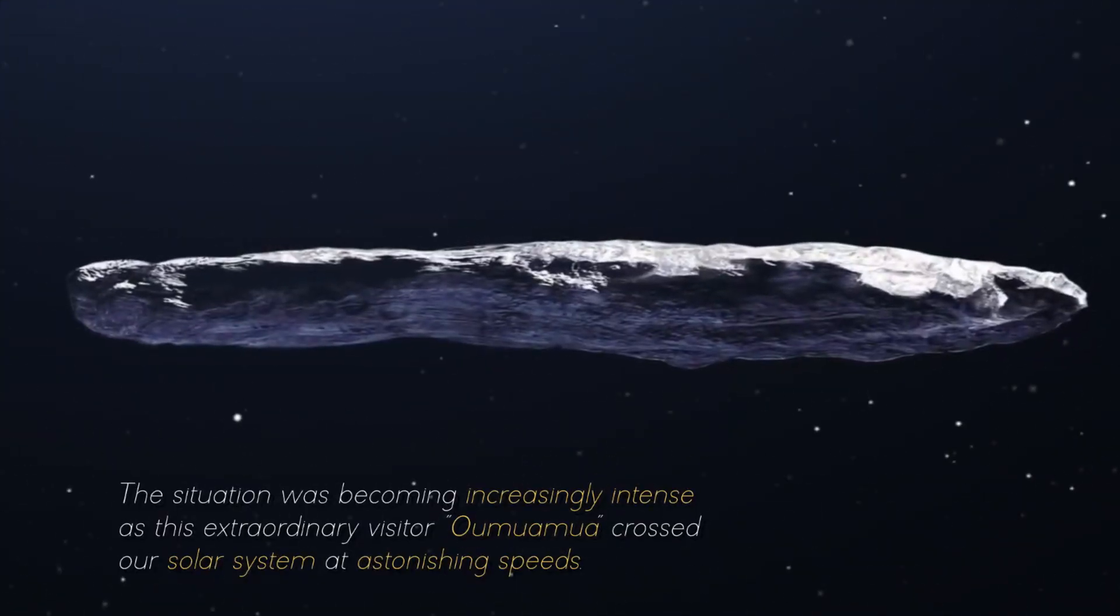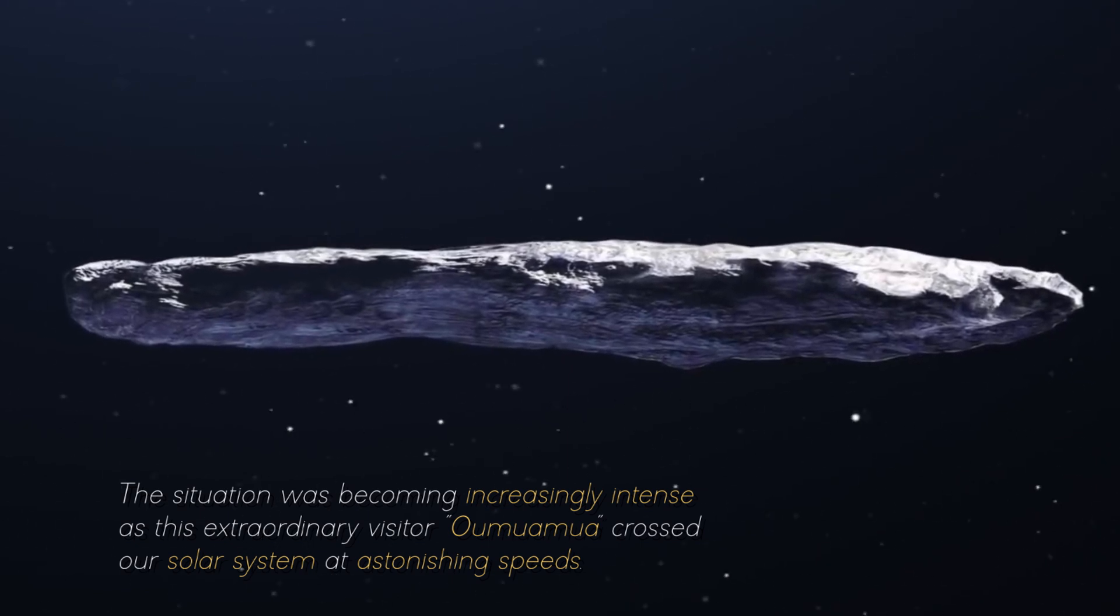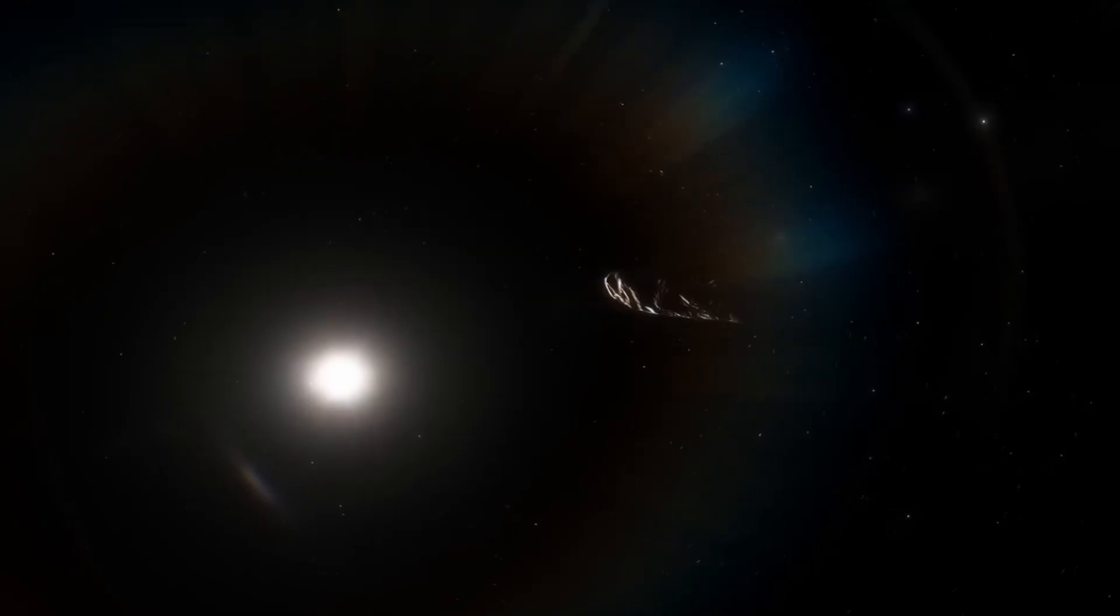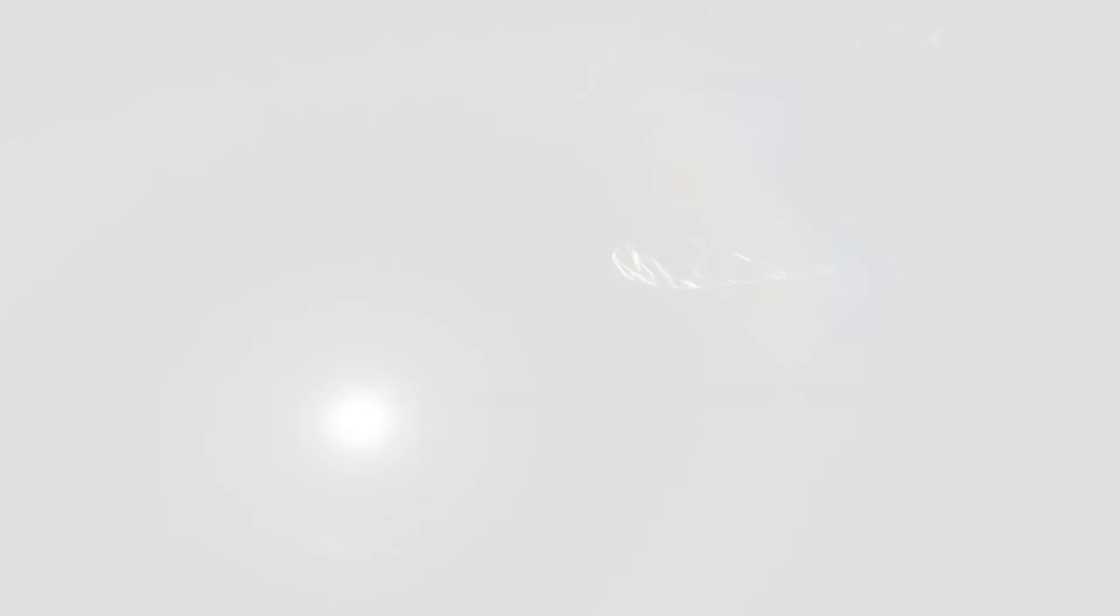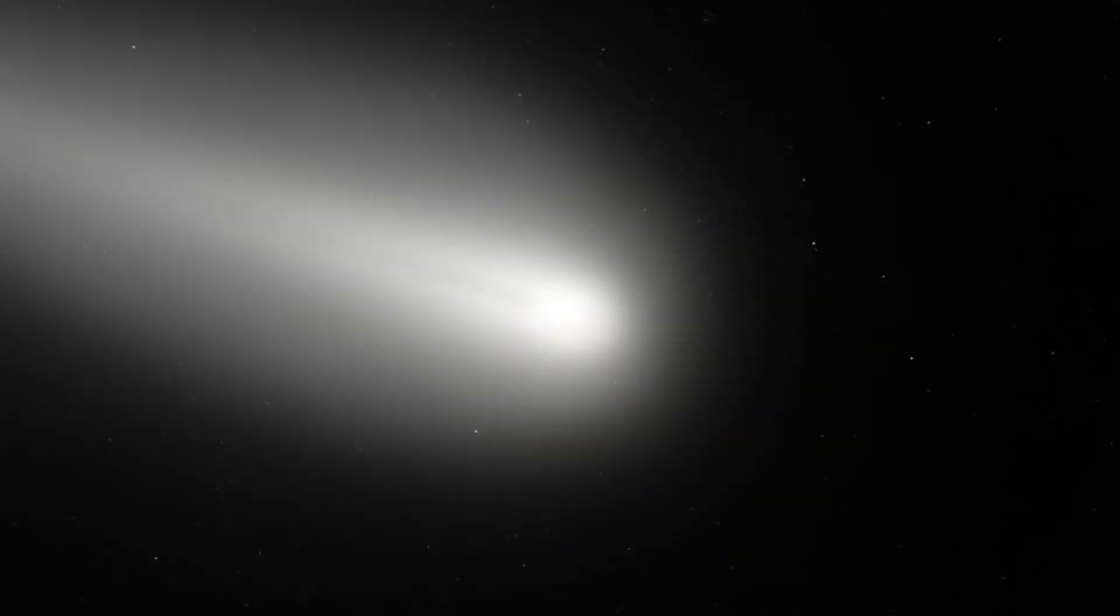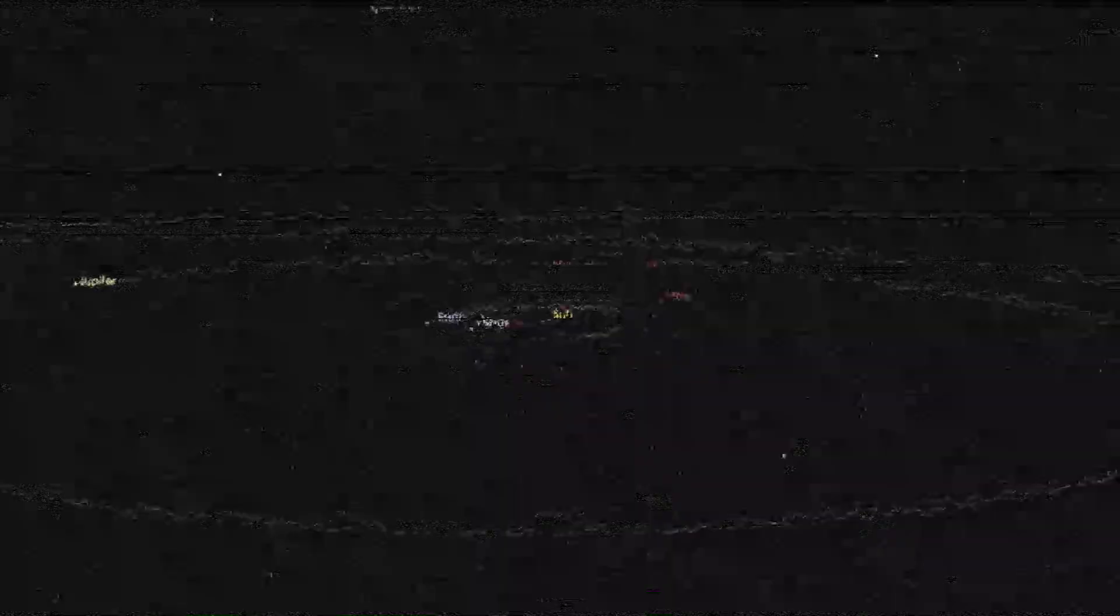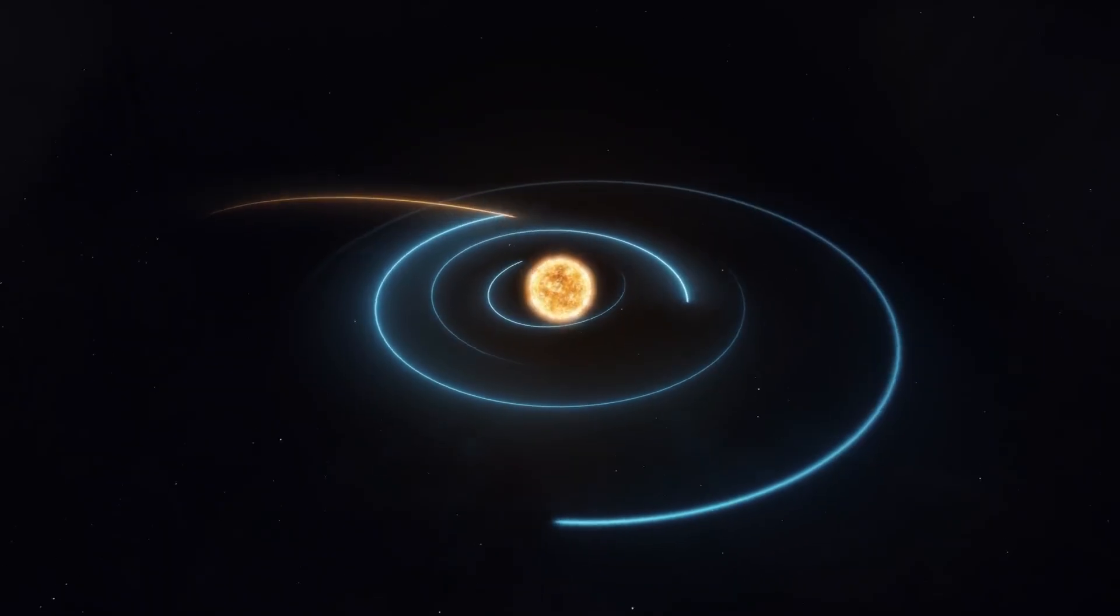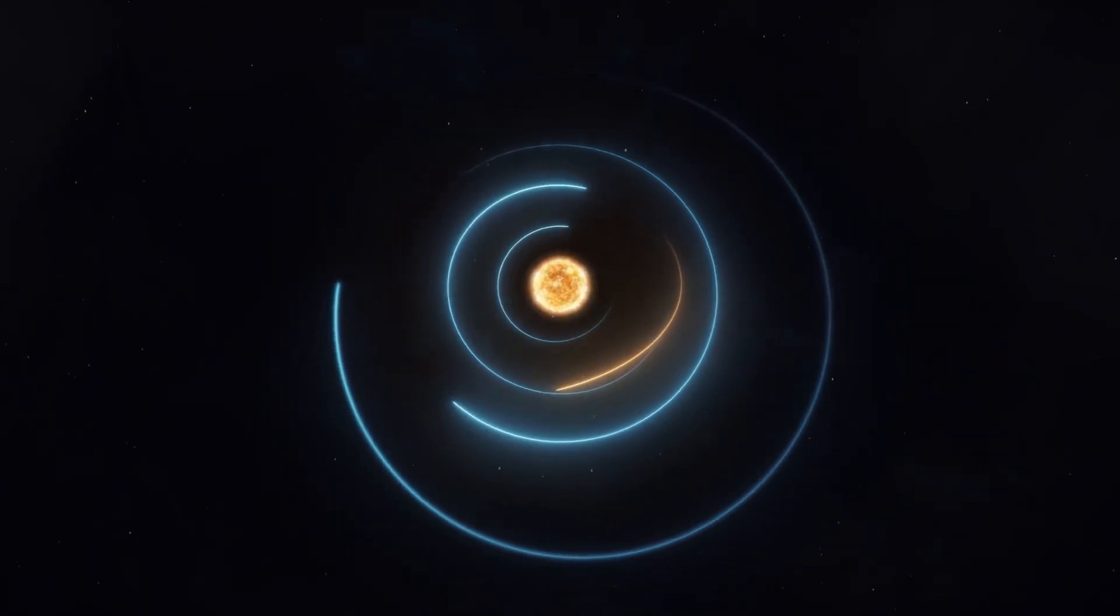The situation was becoming increasingly intense as this extraordinary visitor, Oumuamua, crossed our solar system at astonishing speeds. Each passing moment became crucial as time was rapidly running out for the researchers. They were faced with an imminent and daunting challenge, with only 11 days at their disposal. They had to seize this opportunity to gather as much information as possible about this peculiar cosmic traveller before it got too far away to be studied.